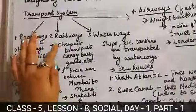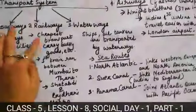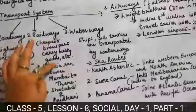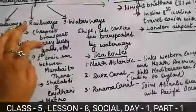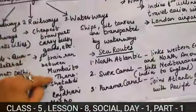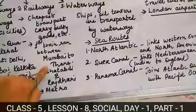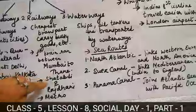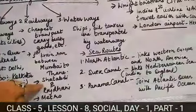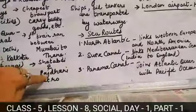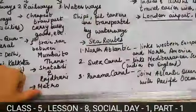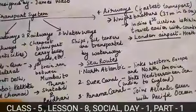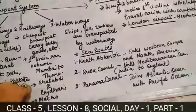Next, railways. Railway is the cheapest transport. Railways carry bulky goods, food, grains, and materials from one place to another. The first train travelled from Mumbai to Thane. There are two famous super-fast trains: Shatabdi and Rajdhani. We also have a metro rail system, where the train runs inside the road underground.